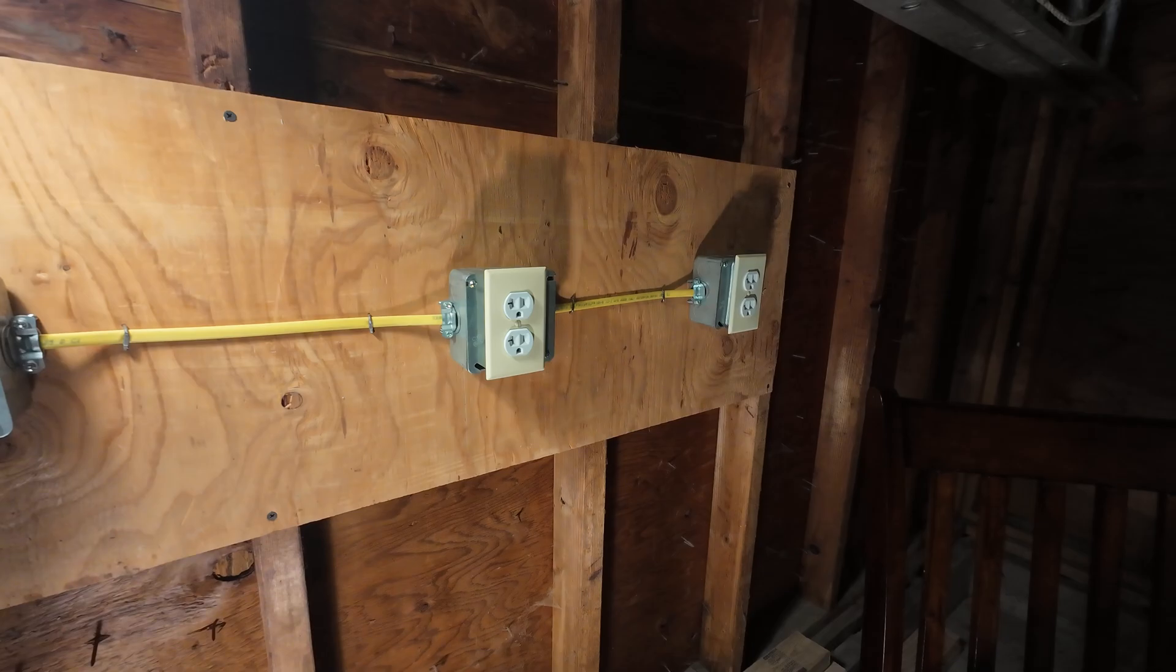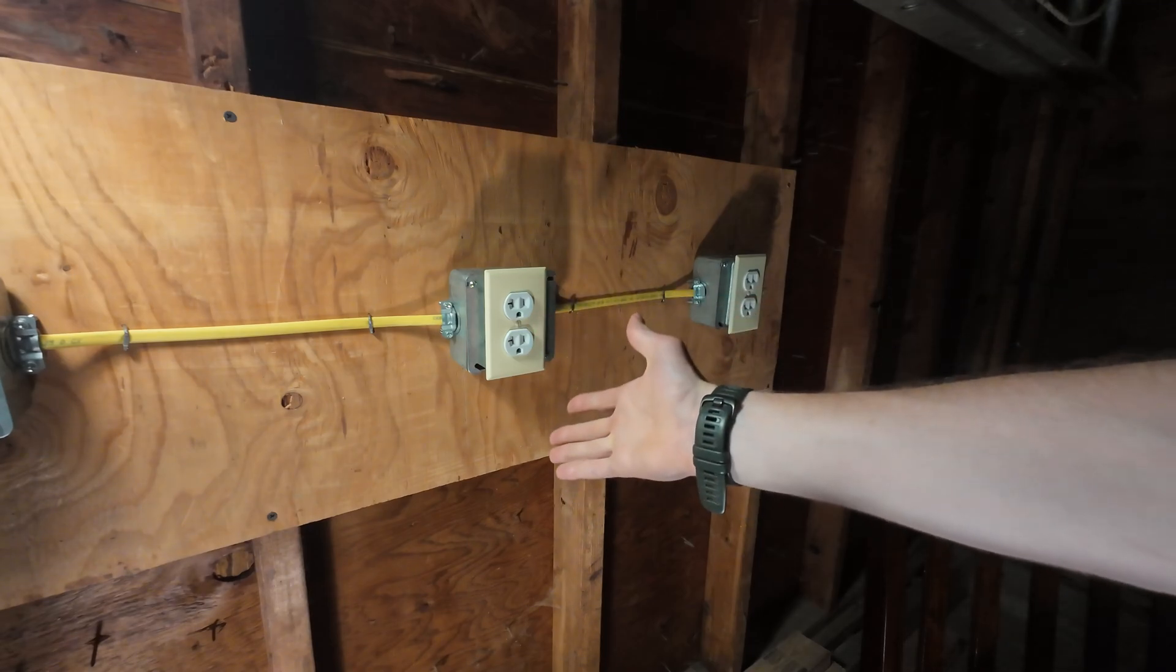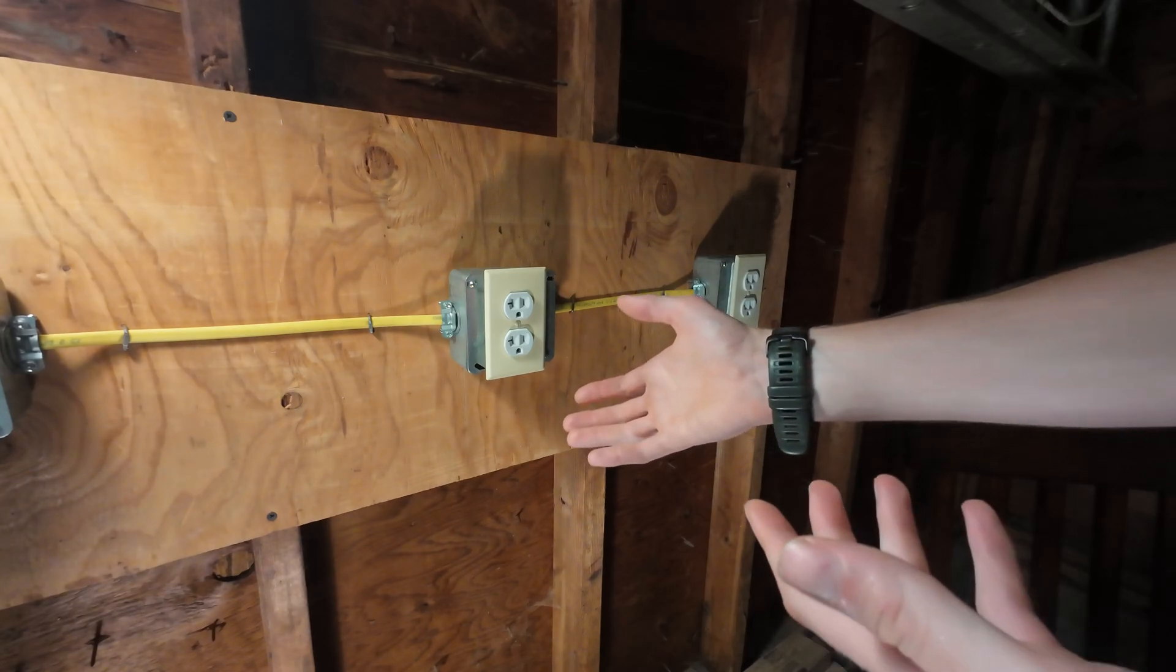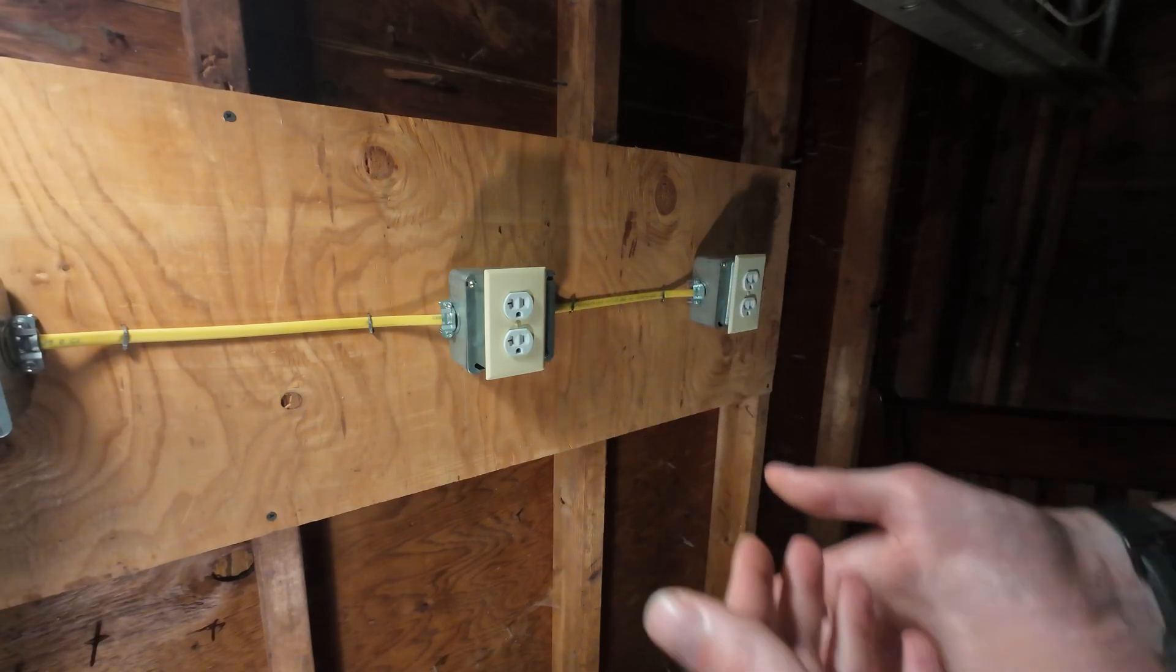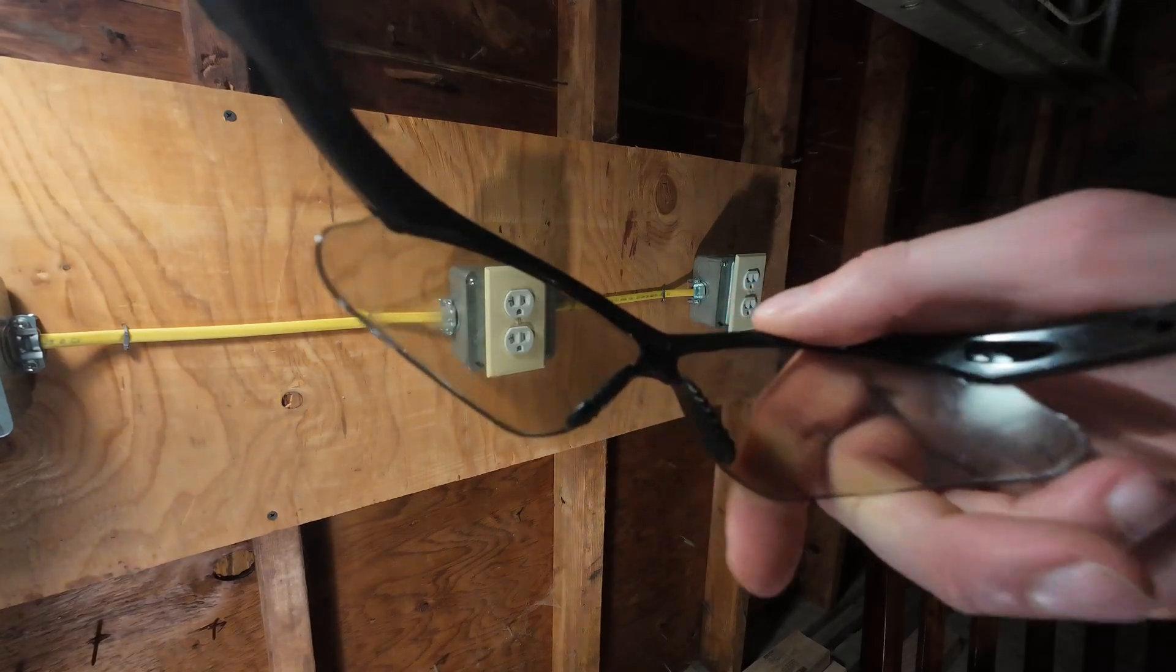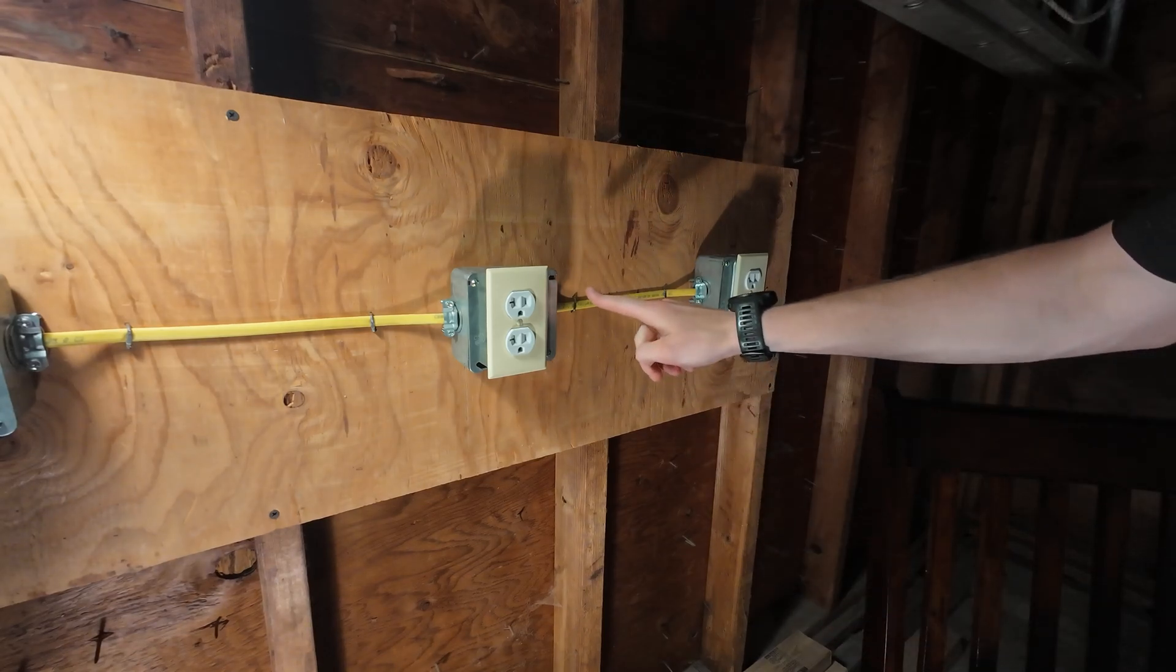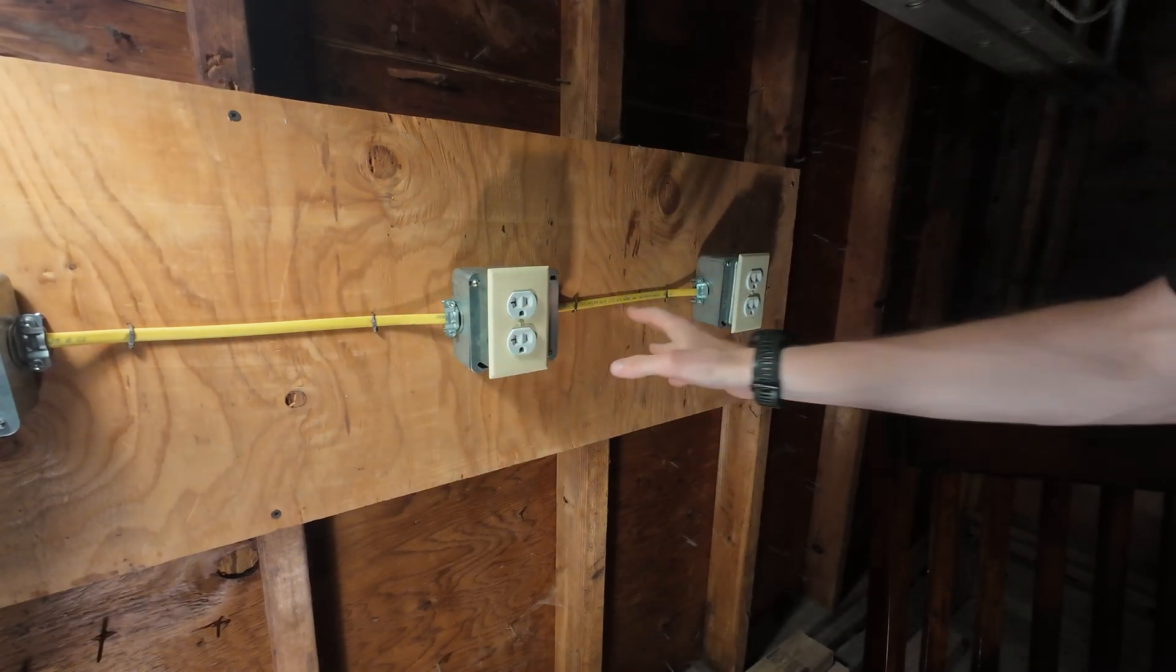In this example, you can see it's just a standard outlet or a receptacle as we call it. This is going to be a situation that many of you will have in your own home. Let's say you want to swap this out. In order to work on it safely, the first step is to turn off the power. But even before you start that, make sure you get a pair of safety glasses and put those on. After you have your proper eye protection, it's now important to identify the power going to this.